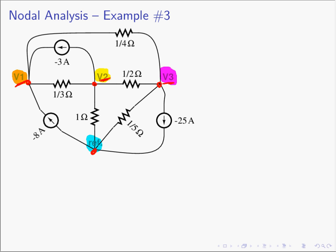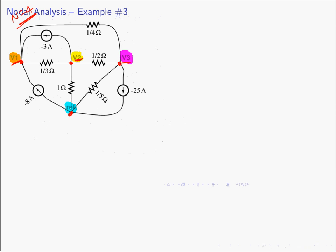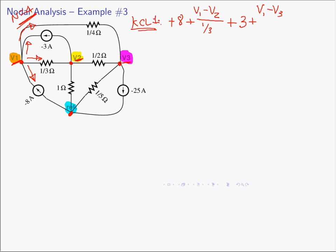Now we write our three KCL equations. KCL at node 1, currents leaving: opposing the minus-8 A source gives plus 8. The current heading toward node 2 is (V1 minus V2) over one-third. Opposing the minus-3 A source gives plus 3. The current heading toward node 3 is (V1 minus V3) over one-fourth. That's all currents at node 1, which must equal zero.